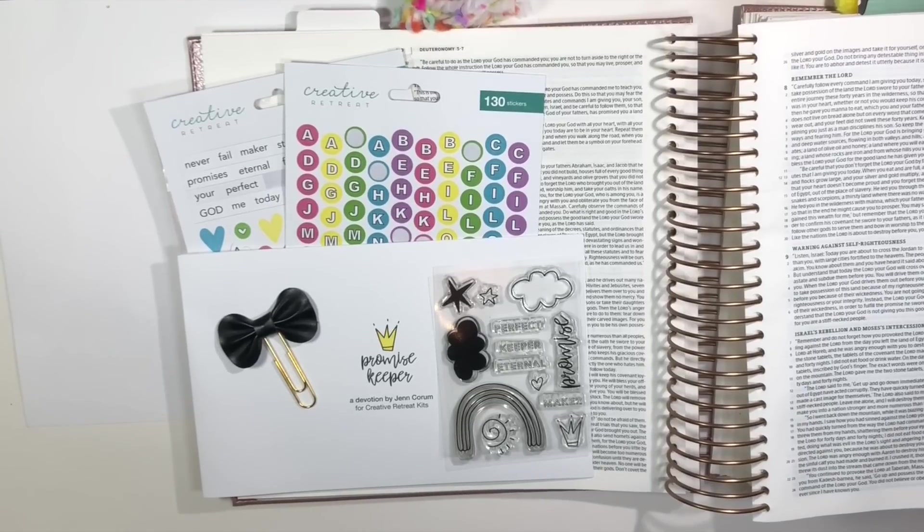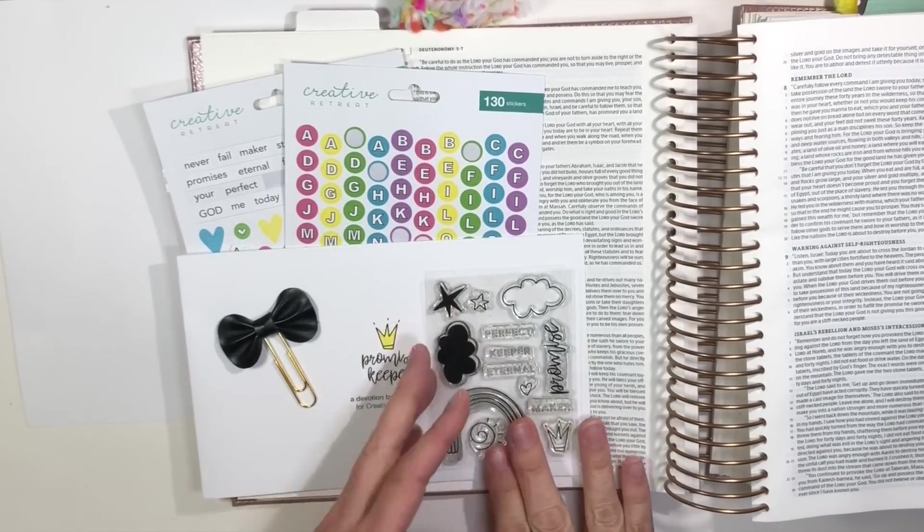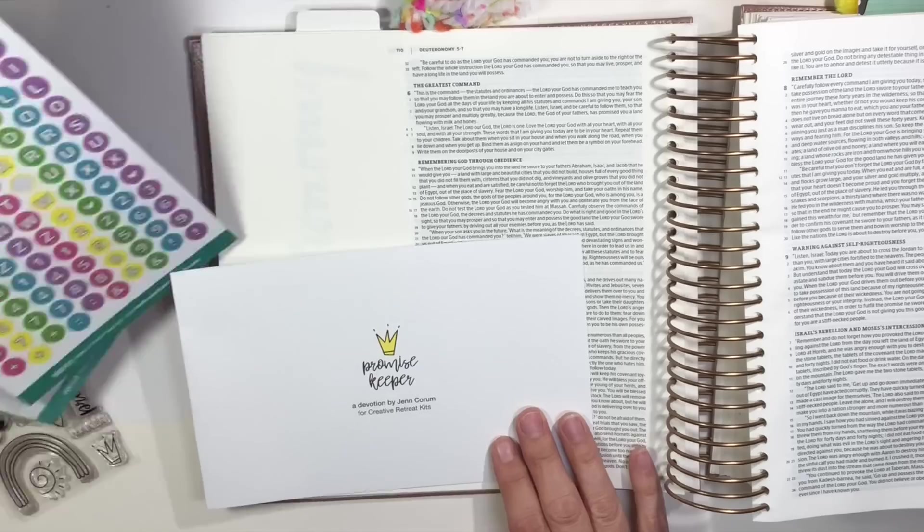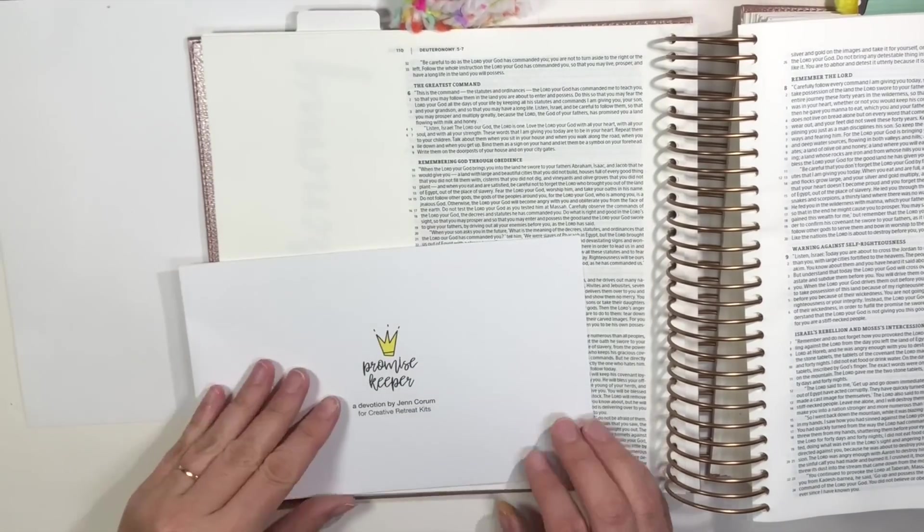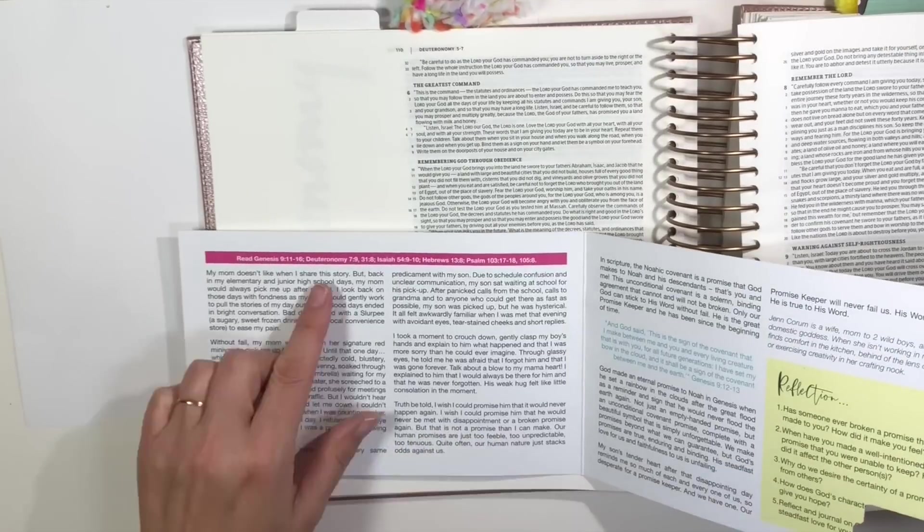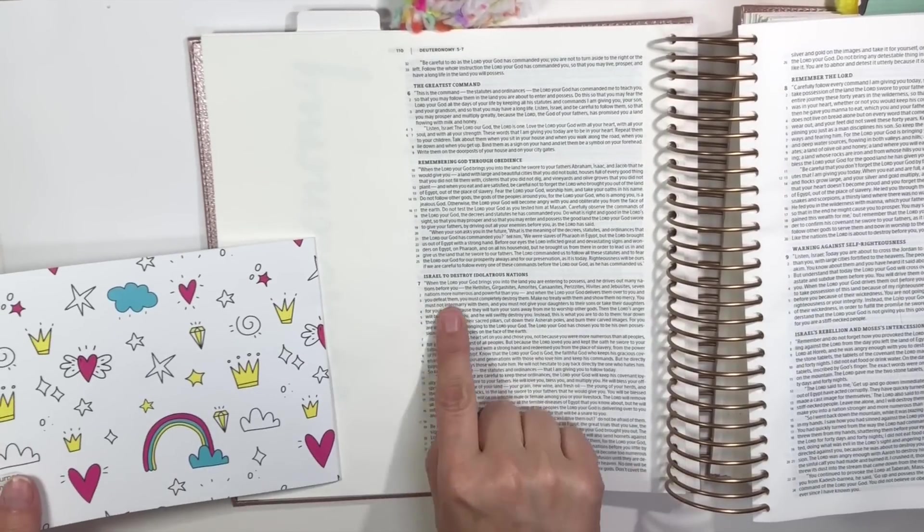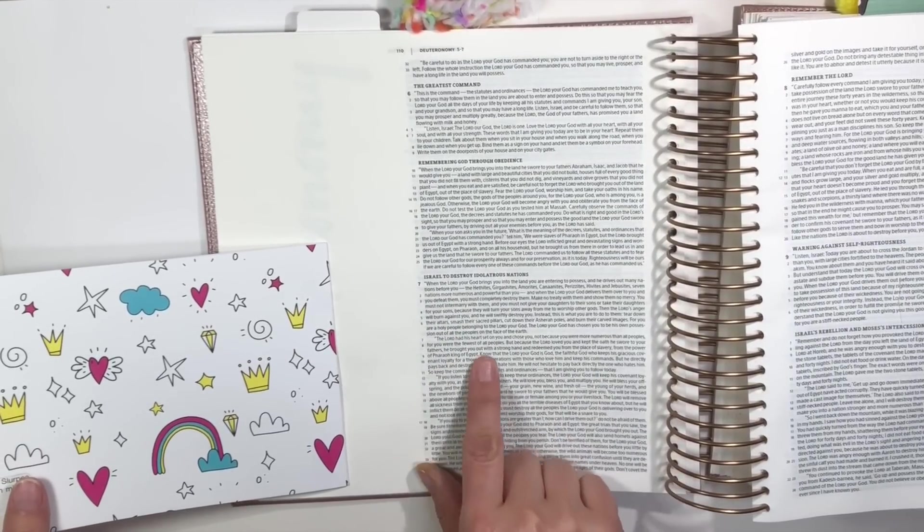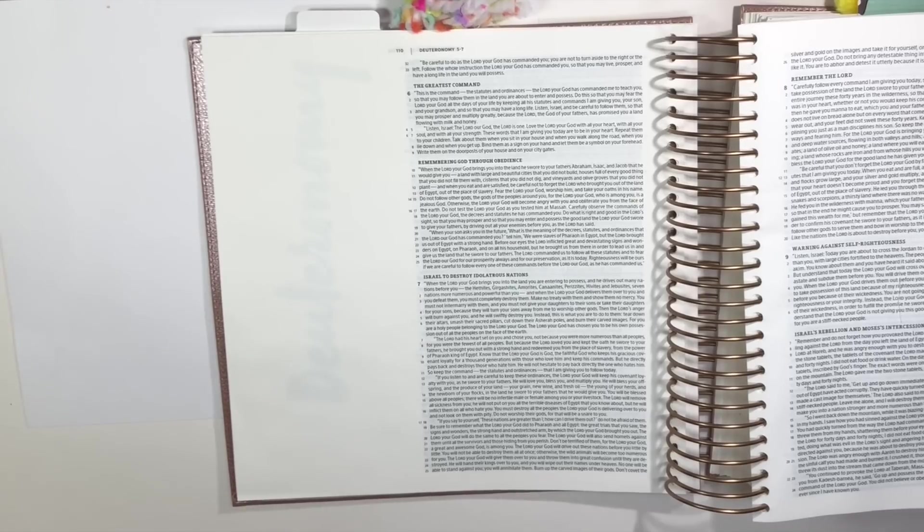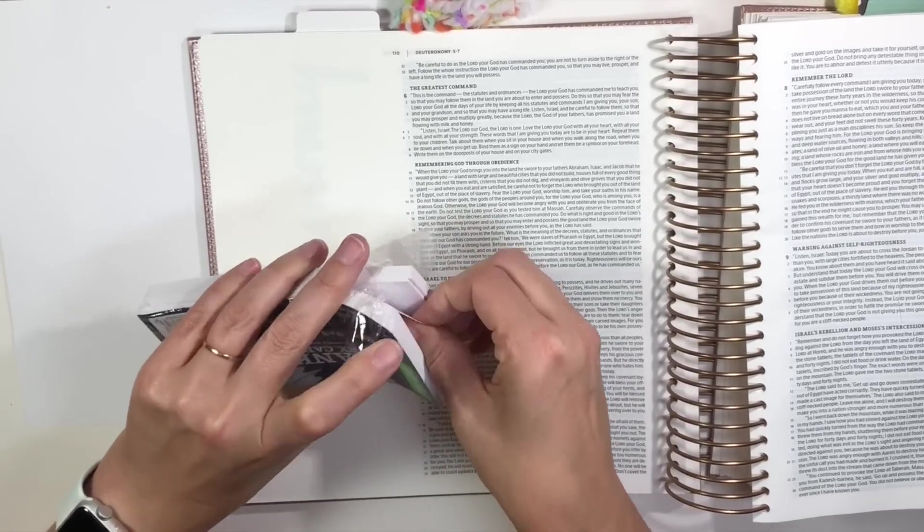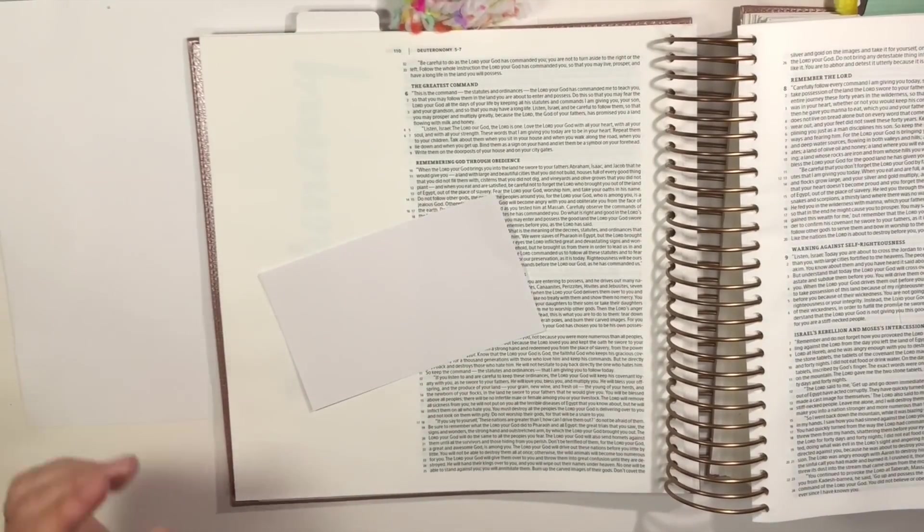I'm here using the June Faith Art Box from Creative Retreat Kids, and this one's entitled Promise Keeper, and I am in Deuteronomy Chapter 7, which is one of the verses that the devotional takes us to. This is a wonderful, powerful passage, and I'll talk about the passage in just a moment.